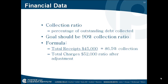A collection ratio is the percentage of outstanding debts collected. Your total goal should be a 90% collection ratio. The formula is your total receipts divided by your total charges, which should equal a percentage. When calculating total charges, the ratio should be taken after any adjustments, so those adjustments should be taken off as well.